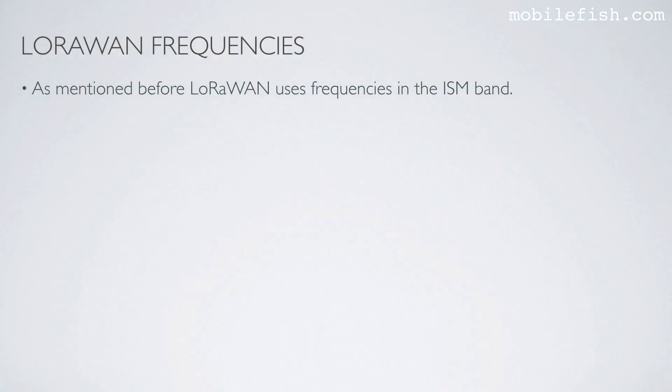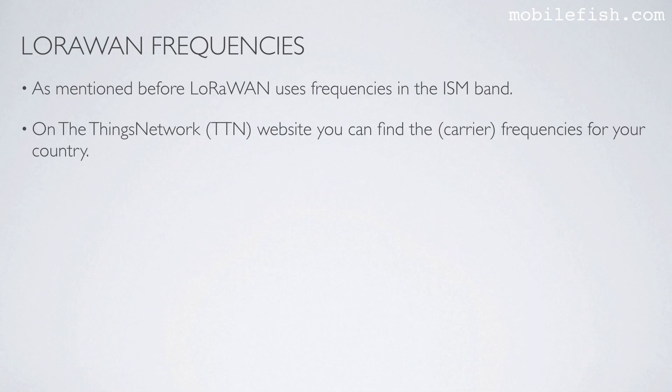As mentioned before, LoRaWAN uses frequencies in the ISM band. On the Things Network website you can find the carrier frequencies for your country.